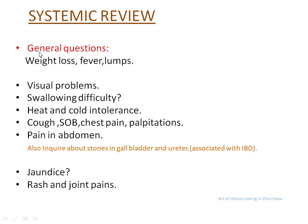Now this is the time to ask about diabetes and hypertension in detail. Remember that till this time we have already asked a lot of questions, and if we forget any question we can cover that in the systemic review. Start with general questions — ask about weight loss, fever, and lumps — then start from head to toe. Ask the patient about any visual problems, any difficulty in swallowing, heat and cold intolerance, polyuria and polydipsia for diabetes. Ask about any history of cough, shortness of breath, chest pain, and palpitations, pain in abdomen, and also inquire about stones in the gallbladder and ureter, which may be associated with inflammatory bowel disease.